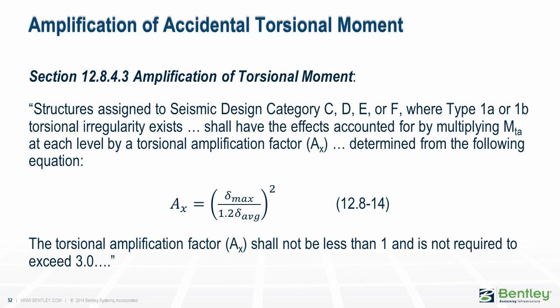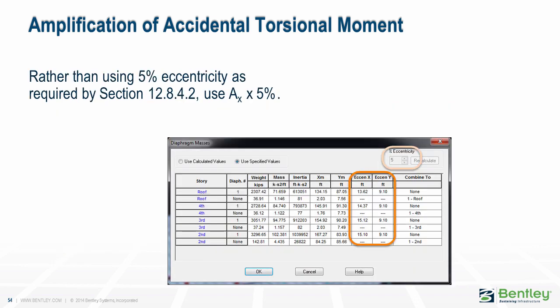If a building is found to be torsionally irregular, the effects of accidental torsion must be amplified. M sub TA is the accidental torsional moment from the 5% eccentricity required by section 12.8.4.2. This clause may result in the requirement that story forces be applied at points with an eccentricity greater than 5% of the floor plan dimension. The purpose is to further amplify torsional effects for structures already prone to torsion. Remember, AX may be different at each level and in each direction — multiply the 5% eccentricity values by the amplification value A sub X calculated for that level and direction, and use the correct amplification value for the given direction.